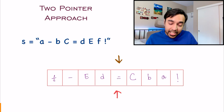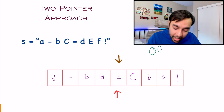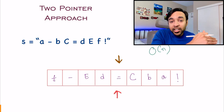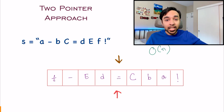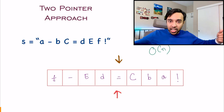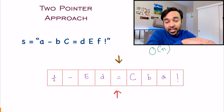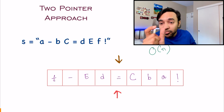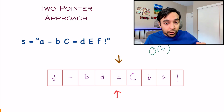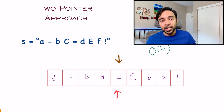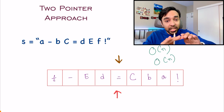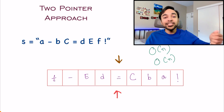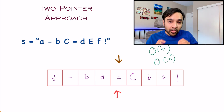The time complexity of this solution will again be O(n) because you have to iterate through the array at least once. This cannot get better than this because whatever be your string, you have to reverse it entirely and you will have to look at each of the characters. The space complexity of this solution is also O(n) because you need that extra array to store your results and swap all the positions.